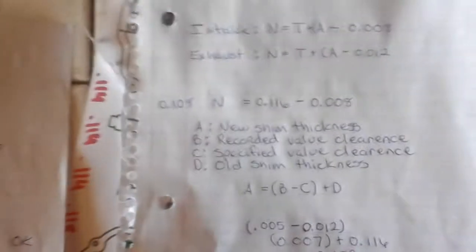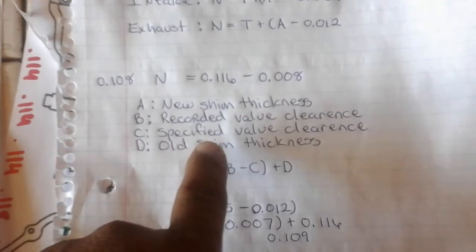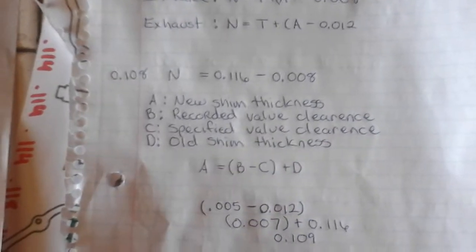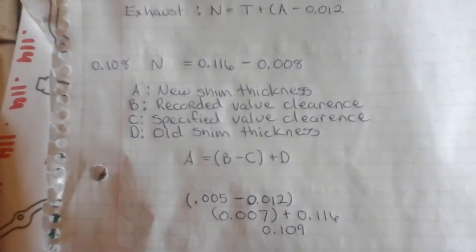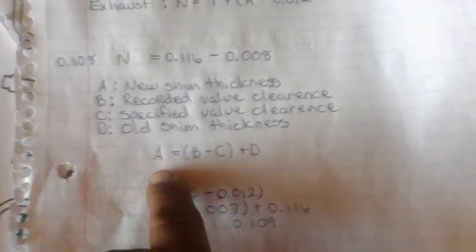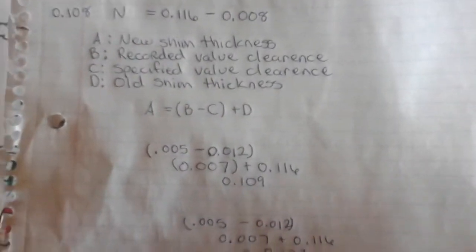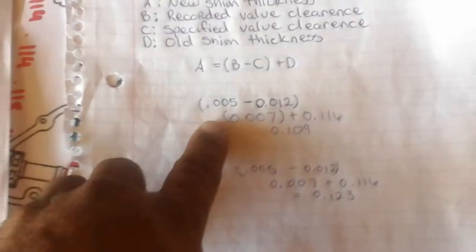I looked online and I found different ways of figuring this out. I saw this on a video. New shim thickness, recorded valve clearance, specified valve clearance, old shim thickness. This is what the formula is: A equals B minus C plus D. And if you write it down this is how it is going to look like.